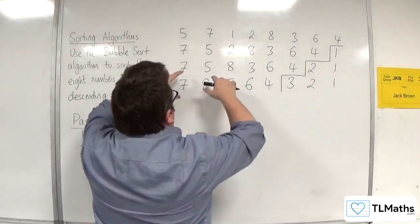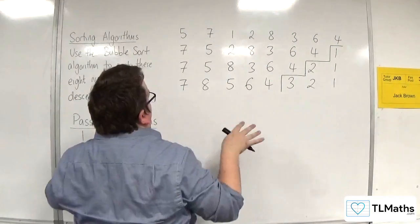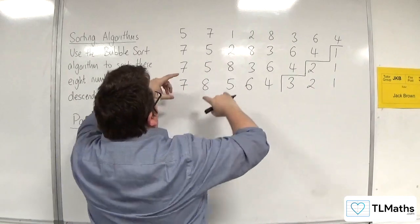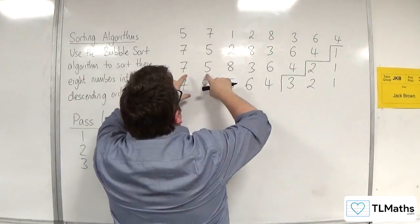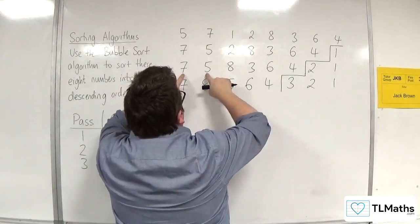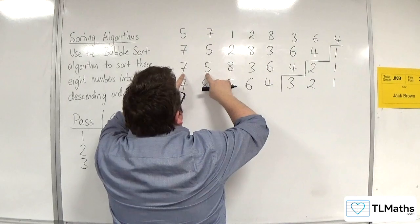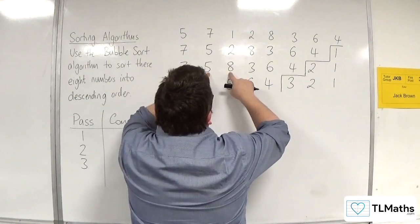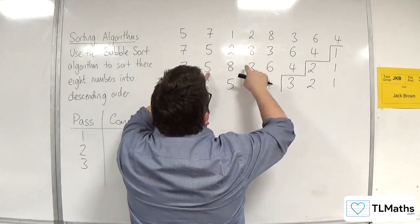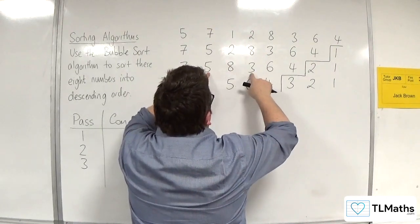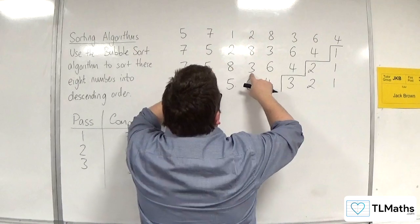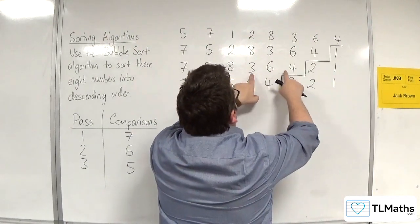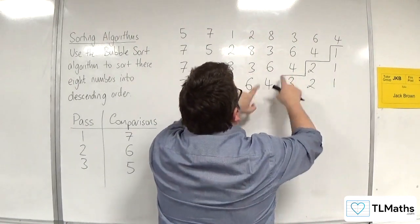Let's just double check — I know it was five, but I was pointing at the wrong ones when I explained it. So seven and five was the first one. Then we had five and eight. Then we had five and three. Then we had three and six. Then we had three and four.